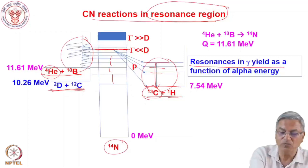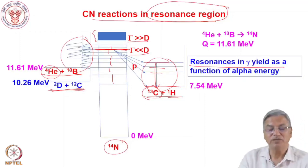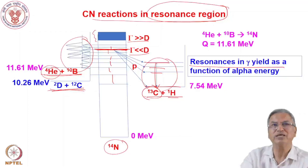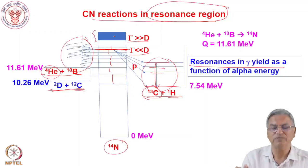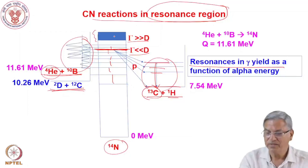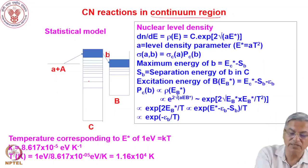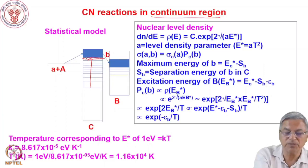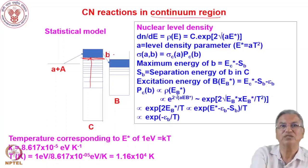In the continuum region, the width of individual levels becomes greater than the spacing between levels, so the levels start overlapping and appear as a continuum. We cannot apply discrete-state formalism here; instead, we apply the statistical model. As you go to higher and higher excitation energies, the gap between excited states decreases until the spacing becomes so small that they overlap completely and form a continuum — behaving like a Fermi gas.